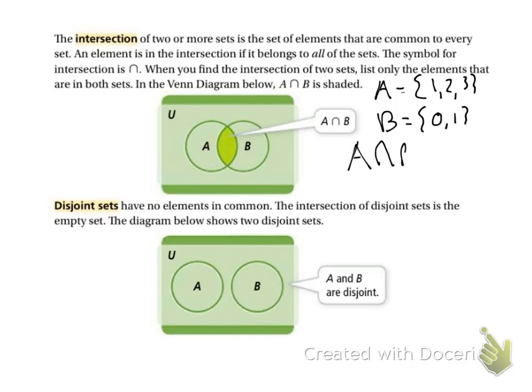the intersection of A and B, it's kind of like we're doing an upside-down cup. That's the way I think of it. So it's wherever they overlap that I join together. The only thing they have in common is 1. So that would be the intersection.